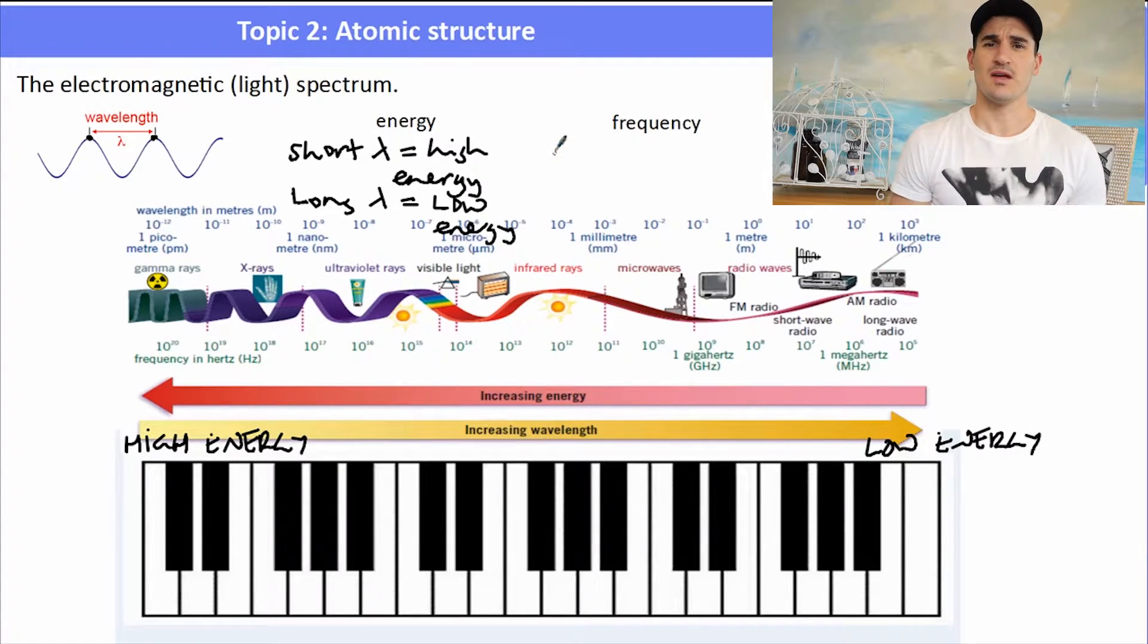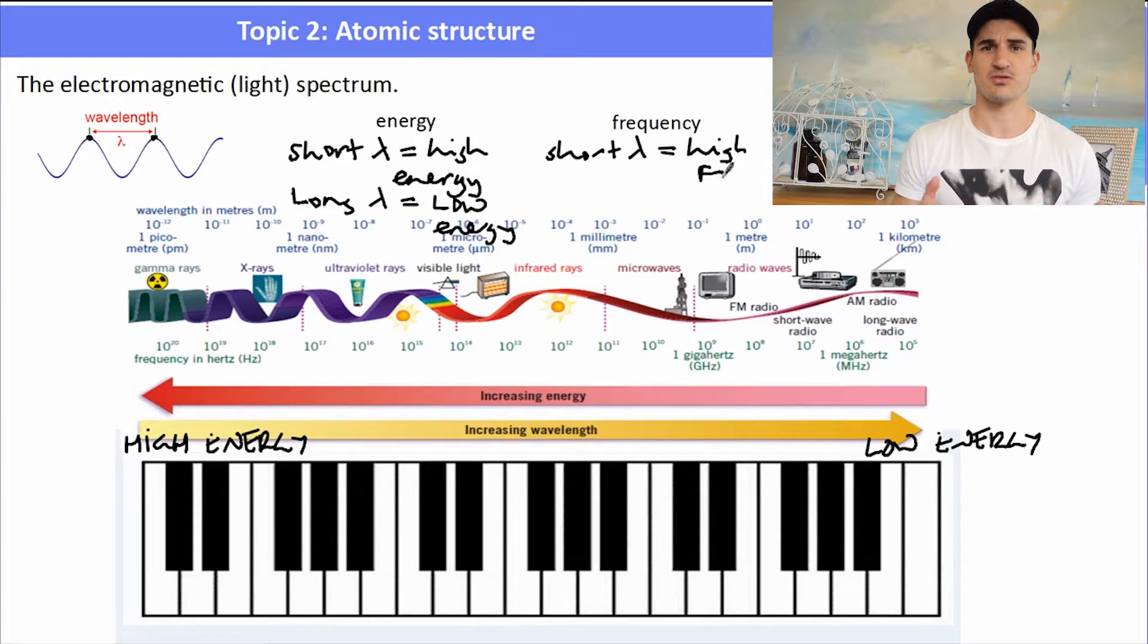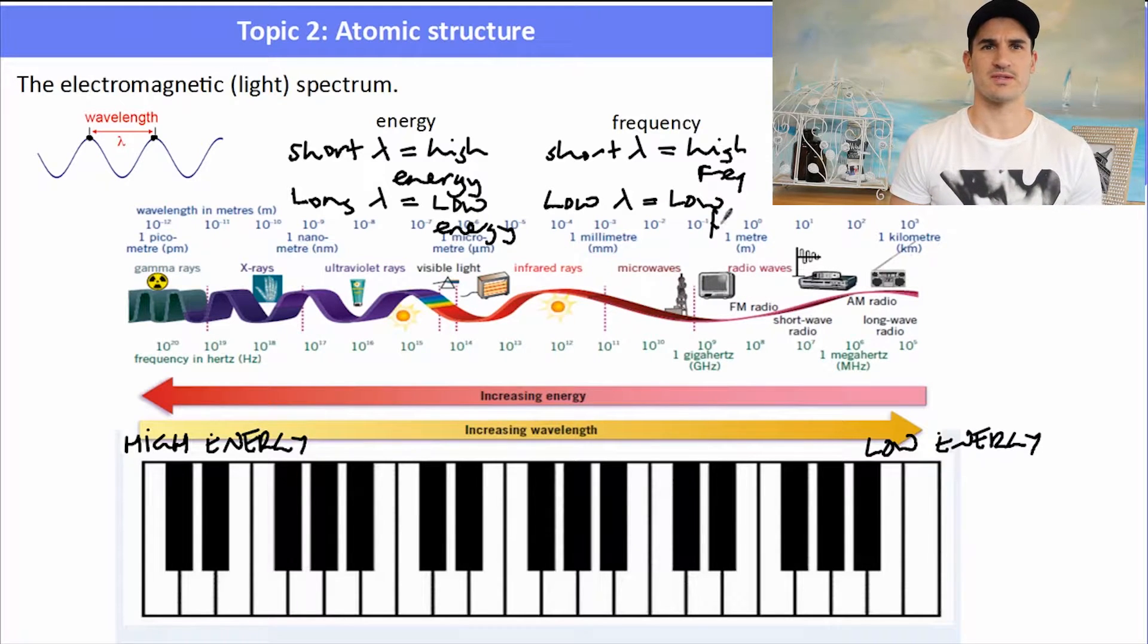Now the frequency, if you have a short wavelength, then you have a high frequency. The frequency is essentially how many waves pass through a point at a given time. If you have a low wavelength, then you're going to have a low frequency. Gamma rays have the most highest energy in the spectrum. Visible light sits in the middle. And then we have our radio waves, both AM and FM, that have the least amount of energy.